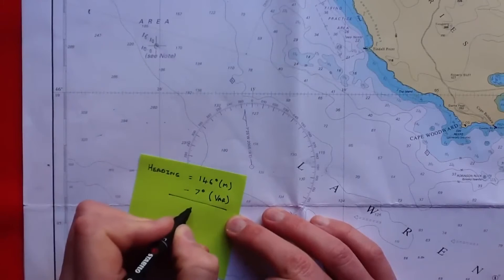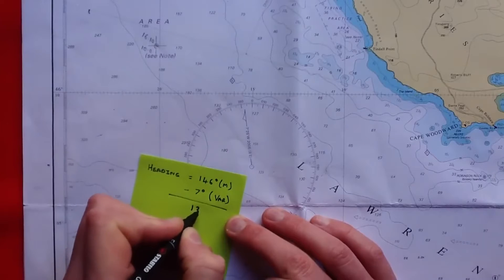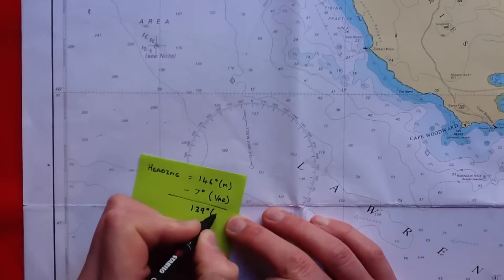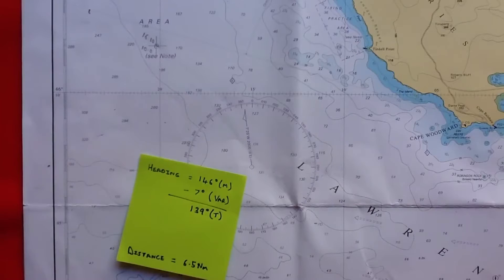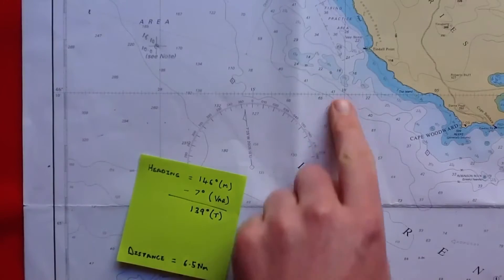So you can see this gives us 139 degrees true. And it has to be a true bearing to allow us to plot it onto the chart, because the chart is based on true north.